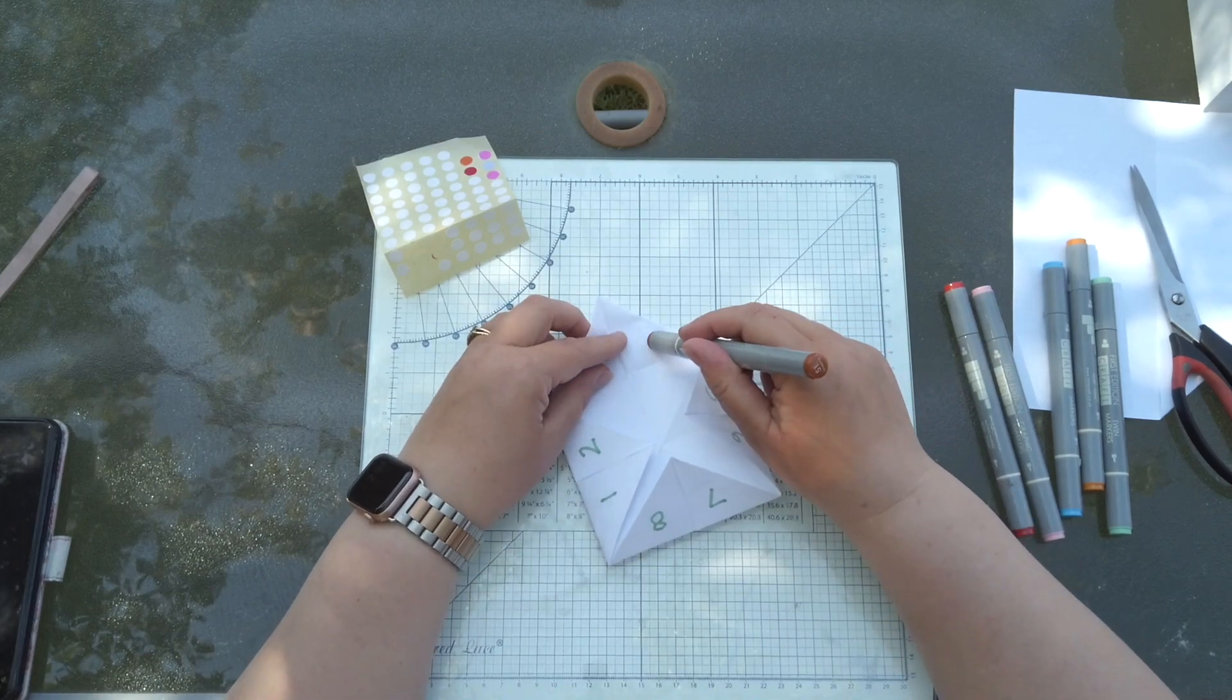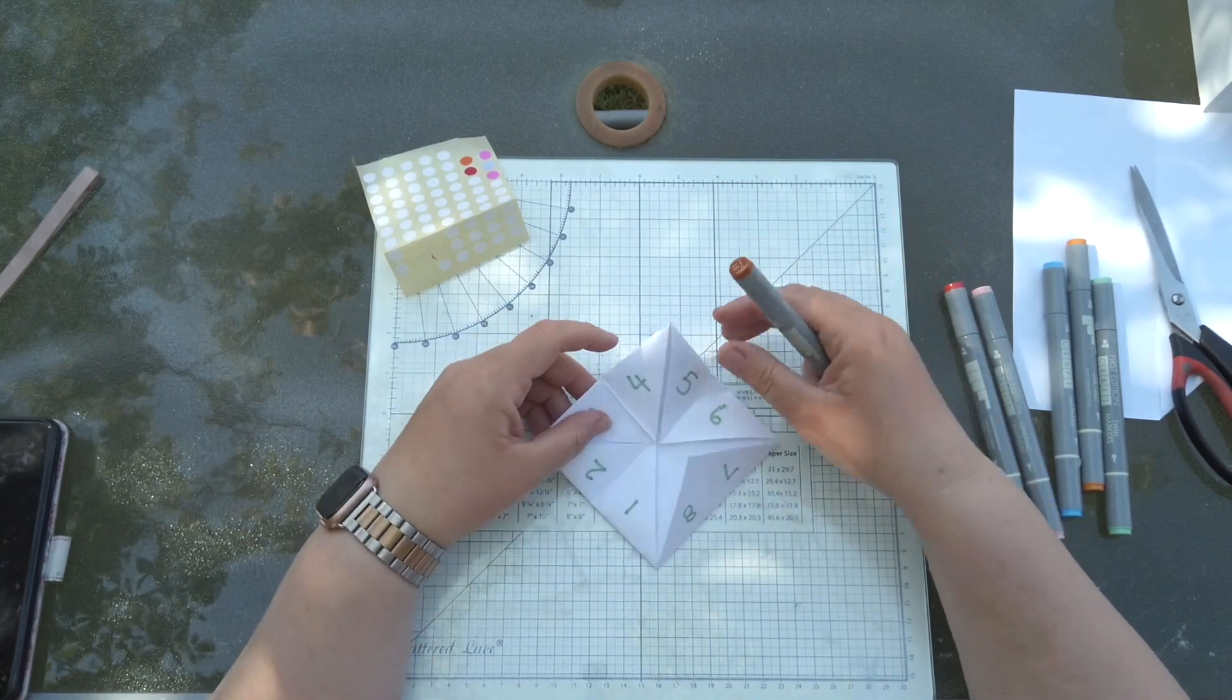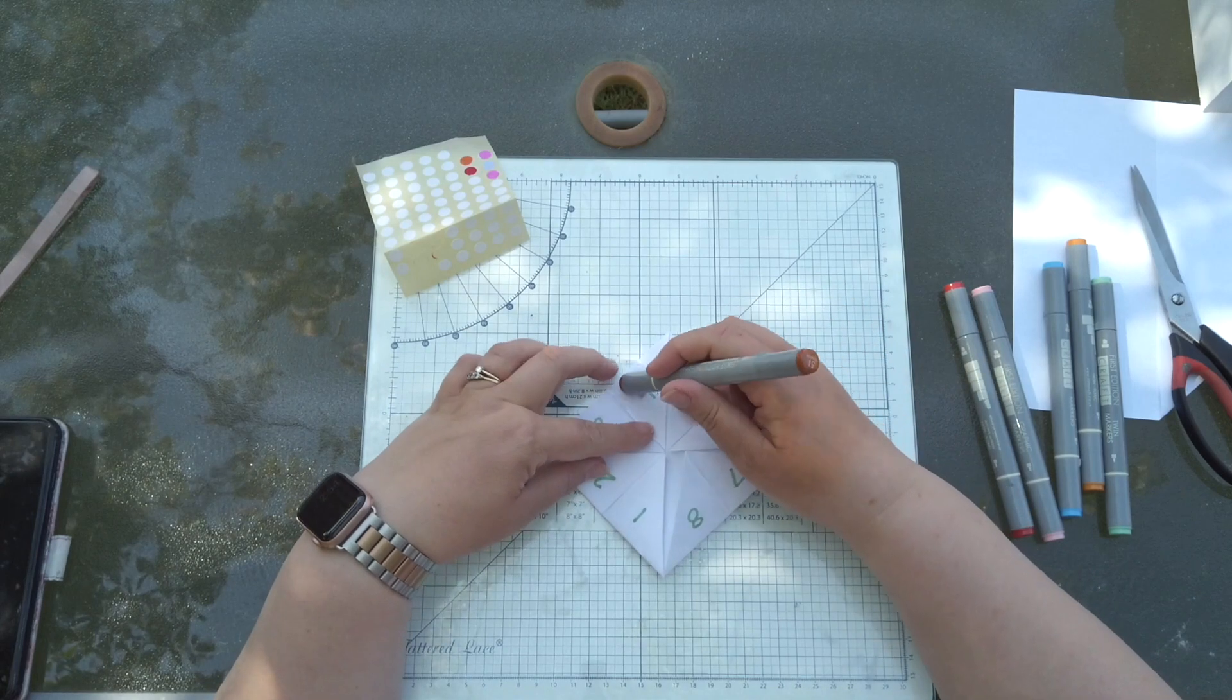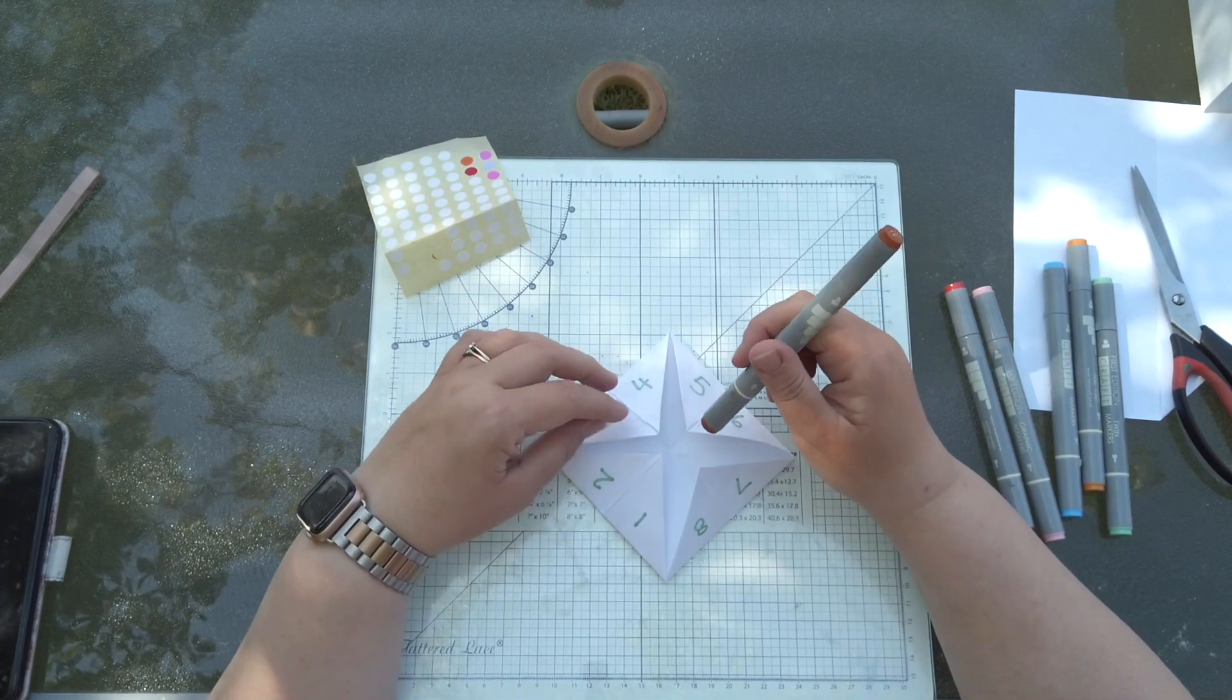You can use it for spellings, so you could have spell me a word beginning with B and then they have to try and guess what it is. You can do all sorts of things so it's a really really good thing to play with. But that is how you make a fortune teller and I hope you've enjoyed it.